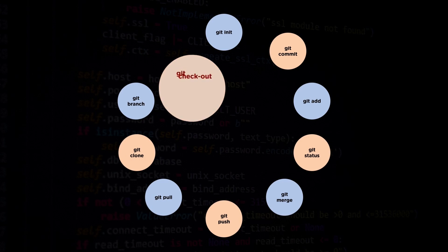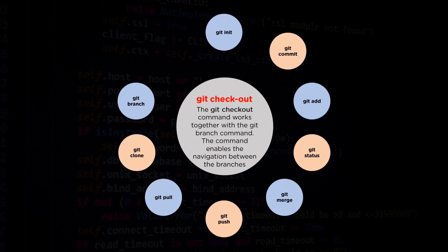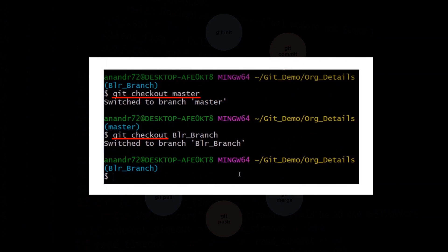The tenth command we shall see is the git checkout command. The git checkout command works together with the git branch command and enables navigation between branches. Here we can see the git checkout master command, which states that we are switching onto the master branch from some other branch. When we execute the git checkout blr branch command, we are switching back onto the blr branch from the master branch, and we can see the files in the local repository fluctuating accordingly.